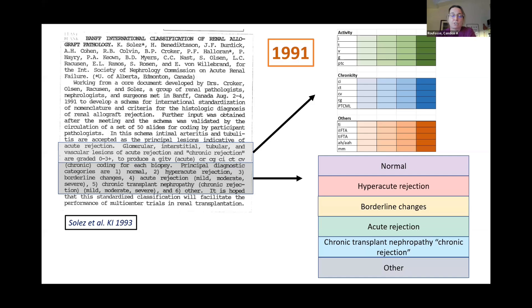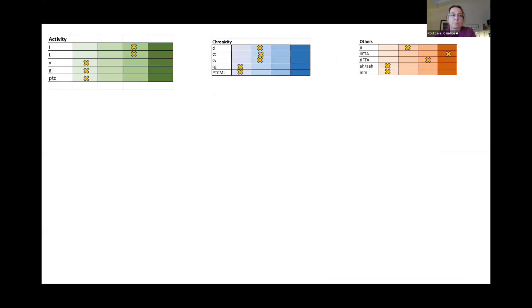The semi-quantitative granular scoring has a lot of advantages, and one of these is really to give you an idea of what the biopsy looks like. So if you look at the Banff scores which are on a scale from zero to three for a whole series of activity and chronicity elements throughout all the compartments of the kidney, you can visualize what the biopsy is going to look like.